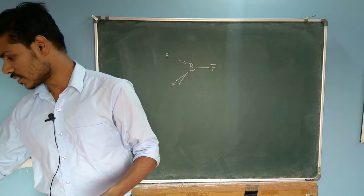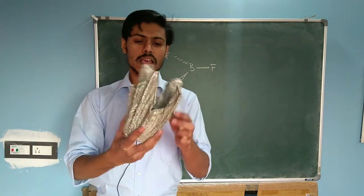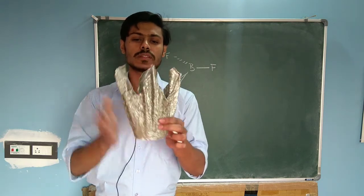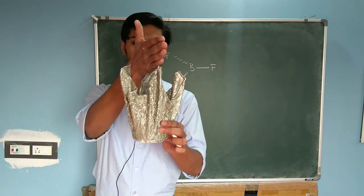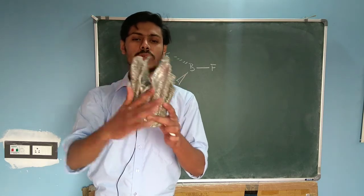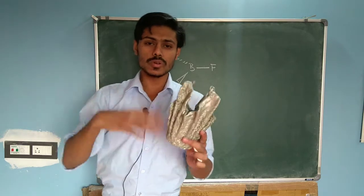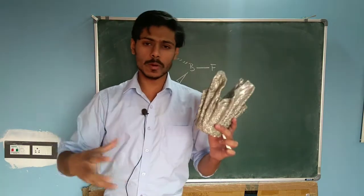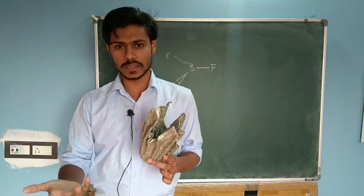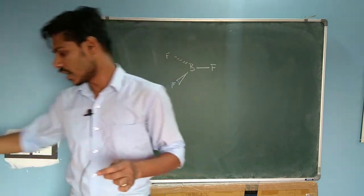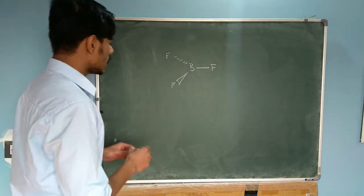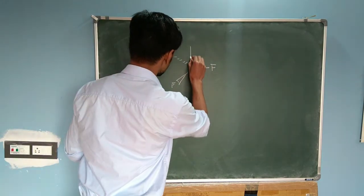Consider a flower vase made in such a way that it has no symmetry — if you cut it you will not have symmetry on two sides, and if you rotate it you get a different arrangement. Whatever operation you do on this flower vase gives a different arrangement, and that's why it is not symmetric. Now let us see the case of BF3.